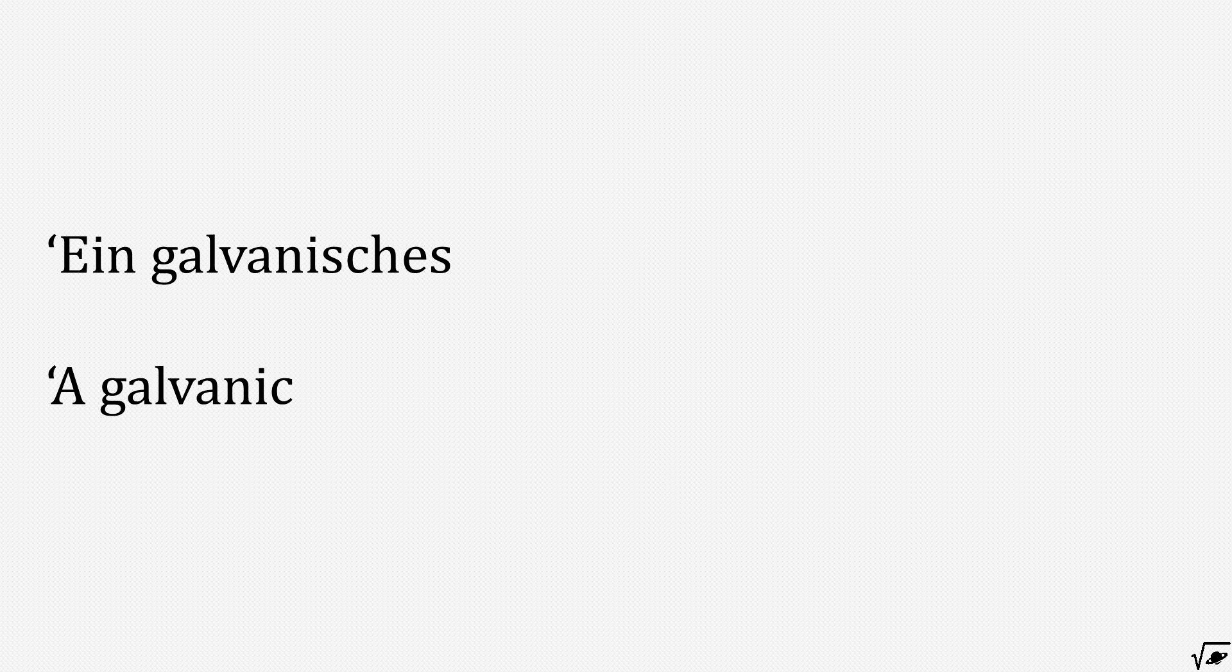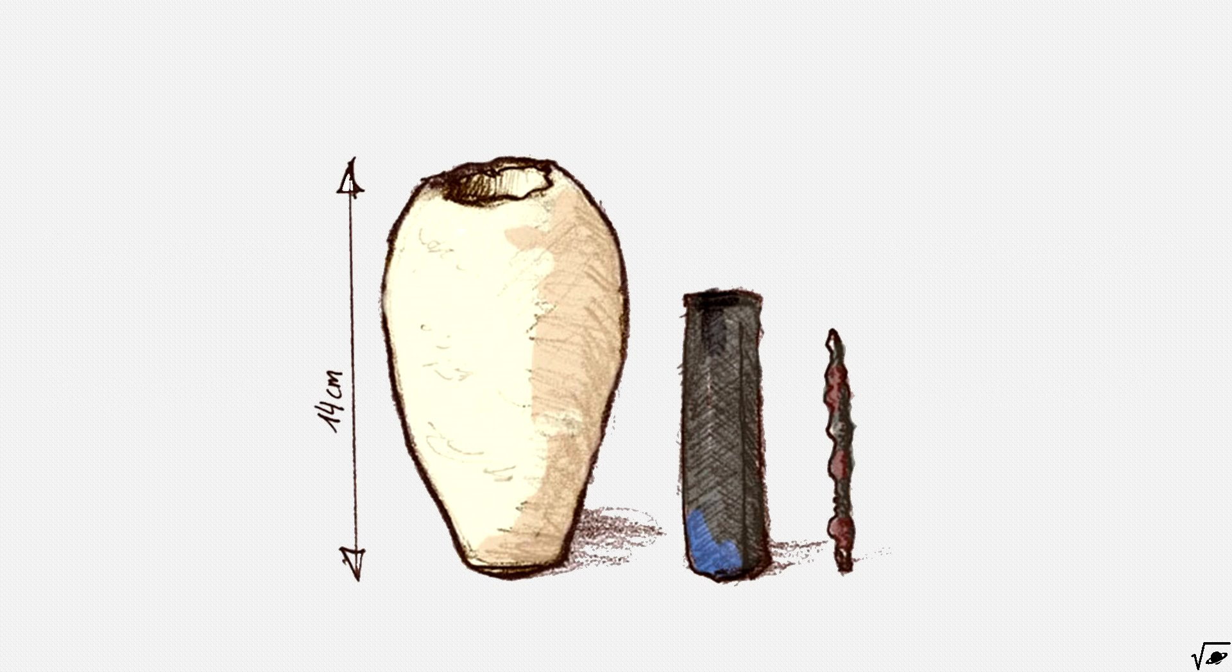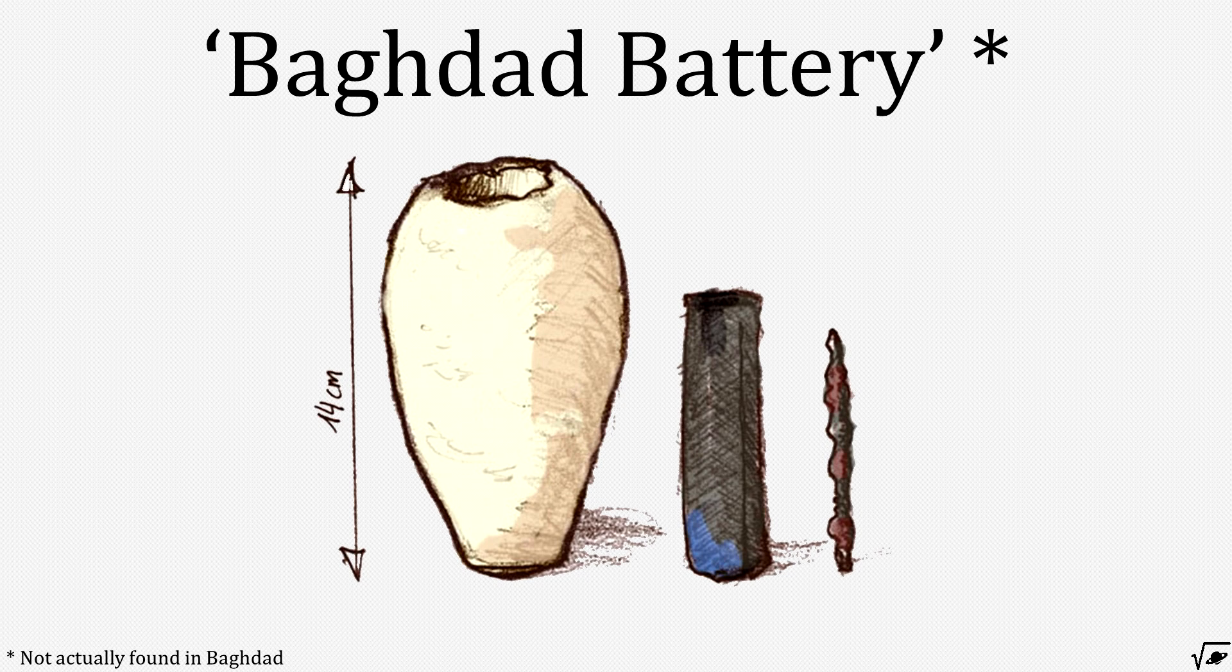In 1938, Wilhelm König published a paper 'Ein galvanisches Element aus der Partherzeit' in which he claimed that three artifacts found in Iraq were used to form a battery, now called the Baghdad battery.